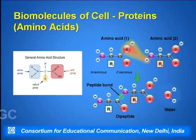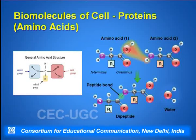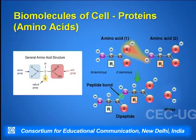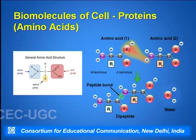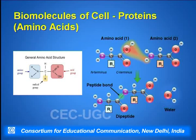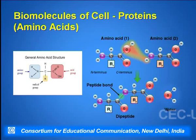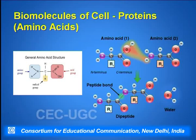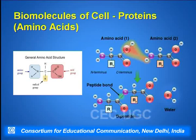If we see the general structure of an amino acid, there is a central carbon to which there is an amino group on one end and a carboxylic group on the other end, and there is an R group which can vary from amino acid to amino acid. Two amino acids combine with one another to form a peptide bond, and in this process a water molecule is released.